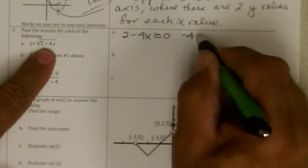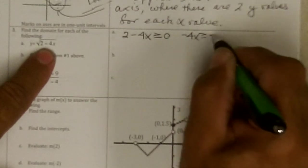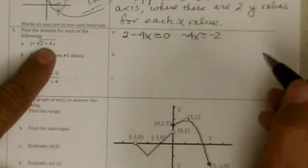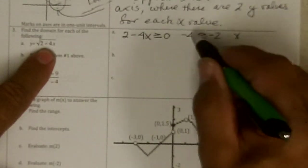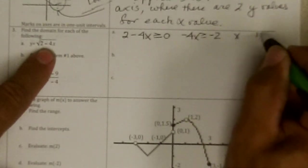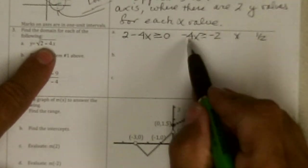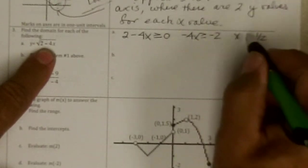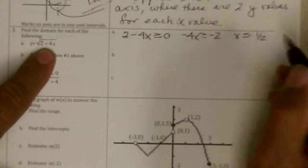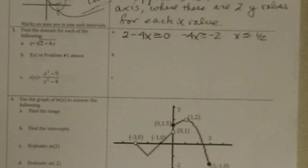and then dividing by negative 4, and if we divide negative 2 by negative 4, we get positive one-half. But at this step, we're dividing by negative, and so we have to flip the inequality sign.